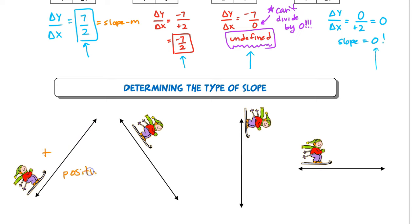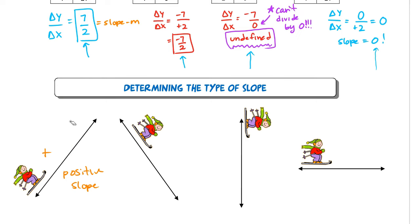If the skier is going uphill, we call this a positive slope. That's like the slope of 7 over 2 we just had. When the skier is going downhill, this is a negative slope — like the negative 7 halves we calculated.